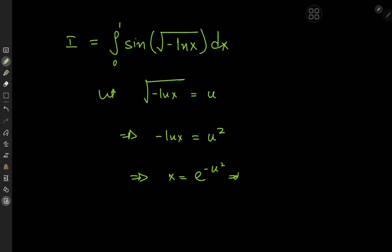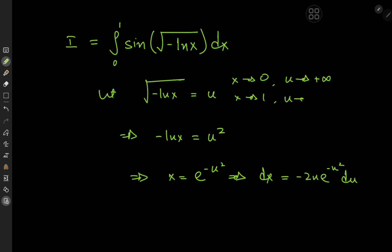This would imply that dx equals negative 2u e to the negative u squared du. Now what about the limits of integration? As x approaches 0, the logarithm approaches negative infinity, so u approaches positive infinity. And as x approaches 1, log x approaches 0, so u approaches 0.